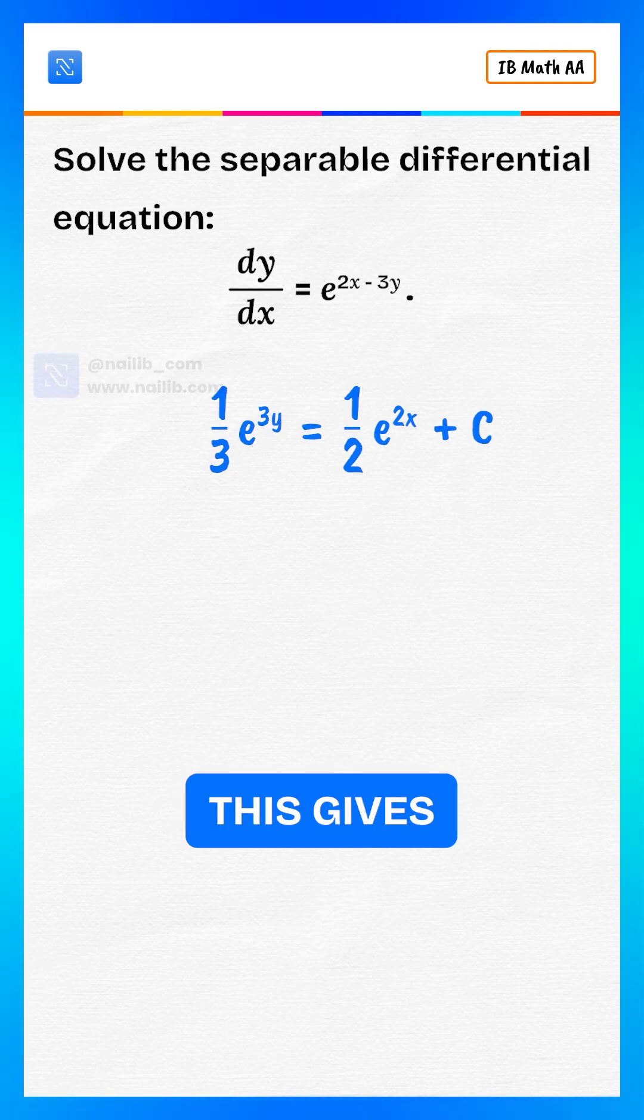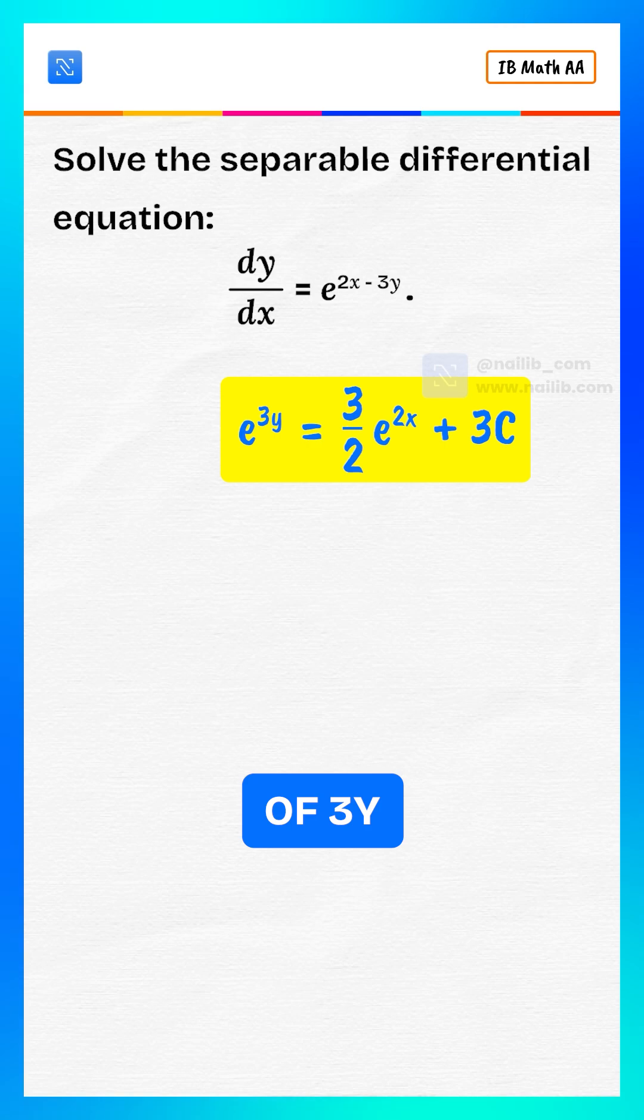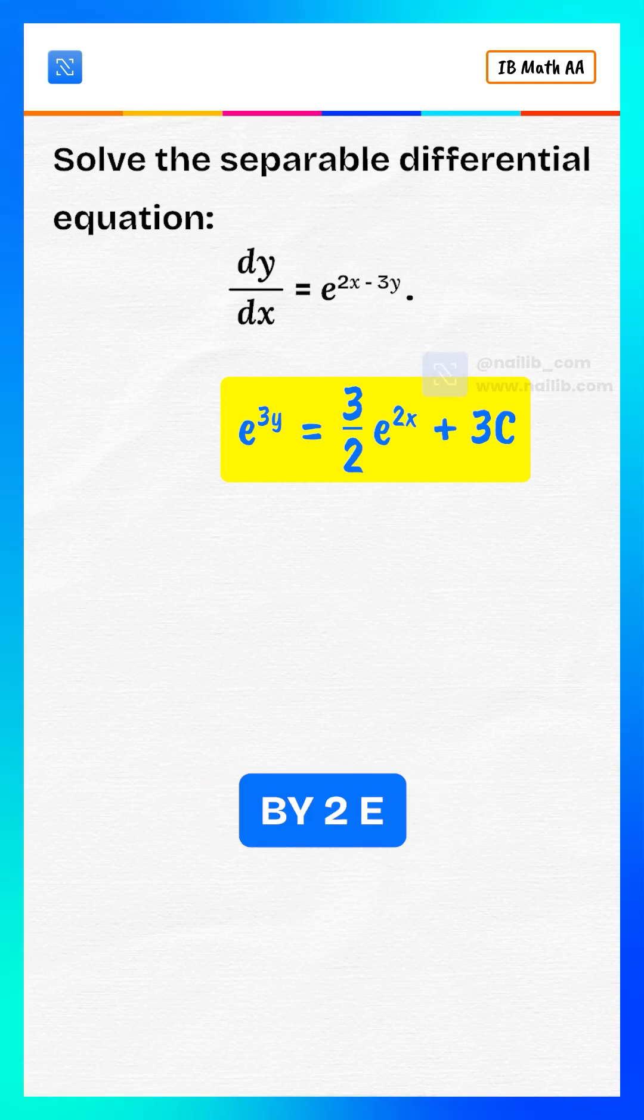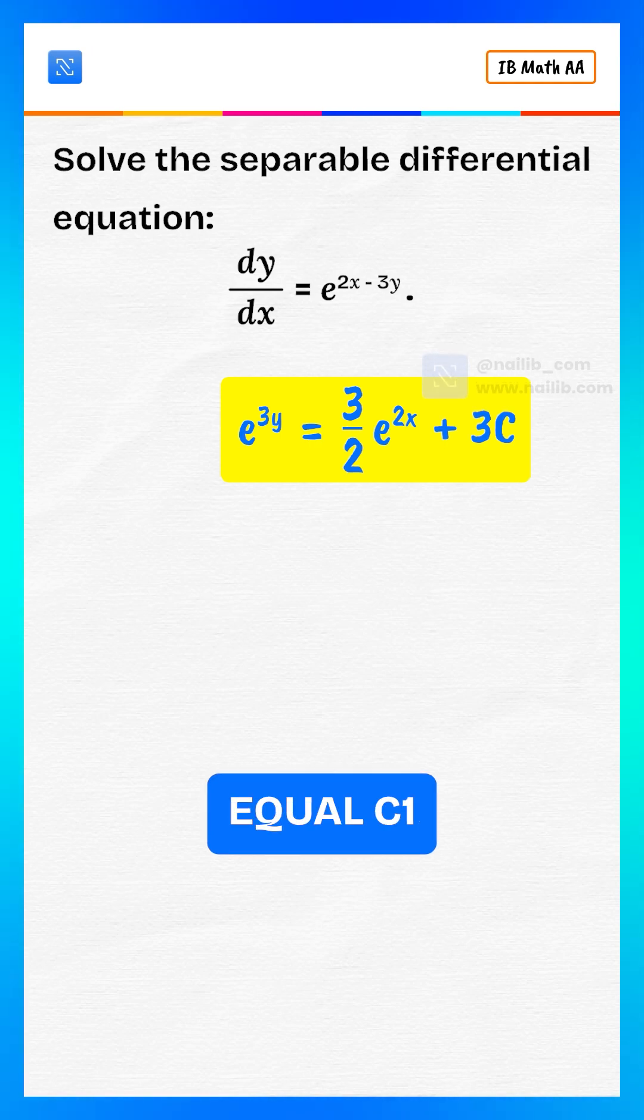Multiply both sides by 3. This gives us e to the power of 3y equals 3 by 2 e to the power of 2x plus 3c which equals c1.